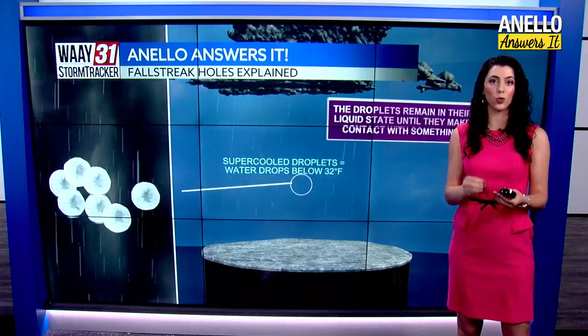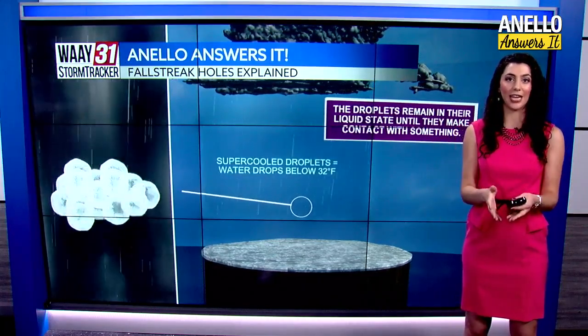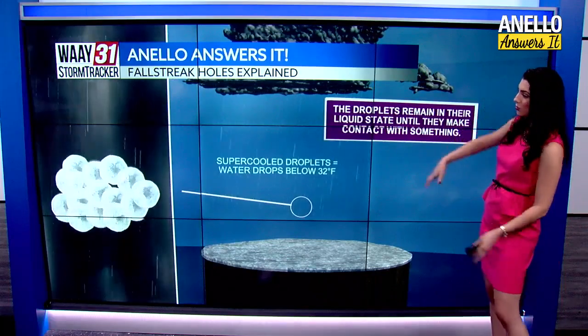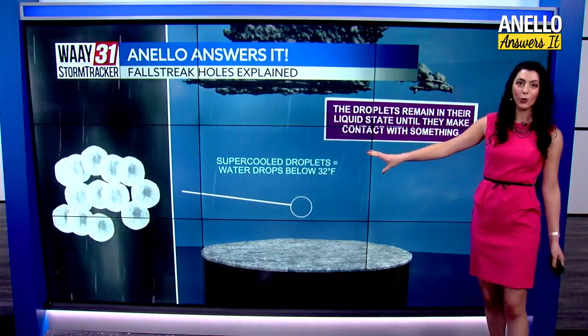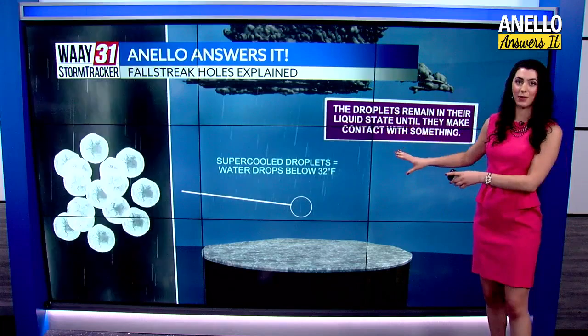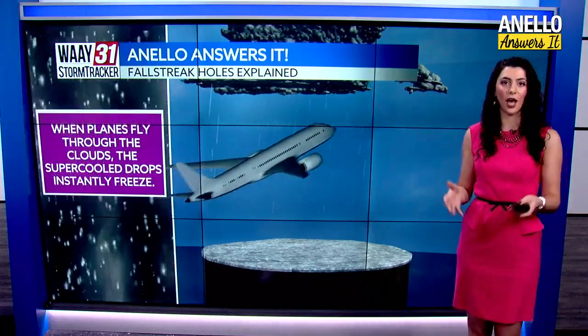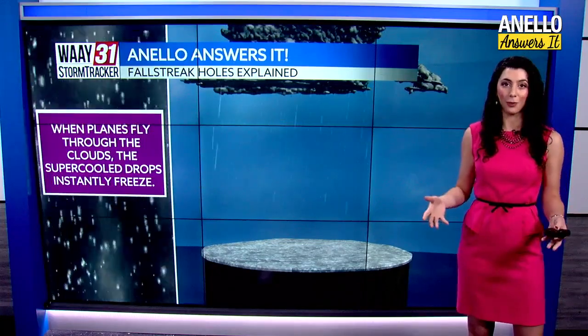You see, once supercooled water touches anything, on impact it becomes instantaneous particles of ice or small particles of hail. So that's what happened in that fall streak hole that we were watching. The question is, what did the particles touch that made them instantly freeze? Well, more than likely, it was an airplane flying through the clouds.